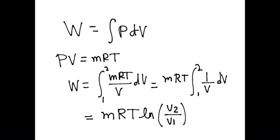And the other way around, if V2 is less than V1, then the natural logarithm is going to be negative, which is compression.